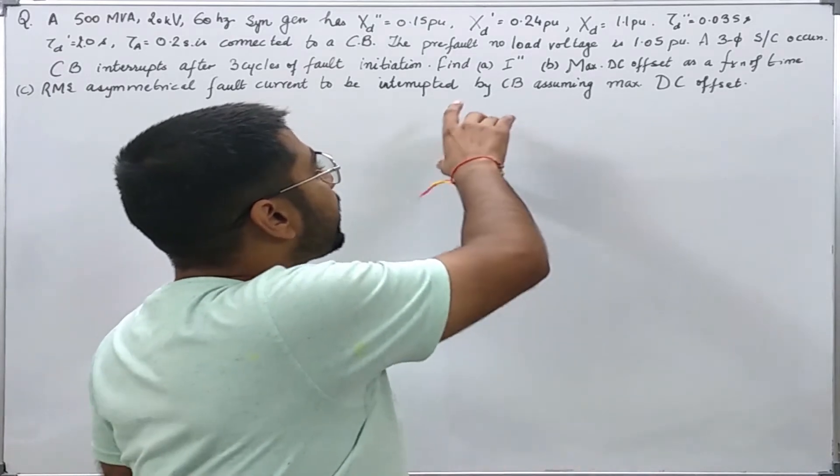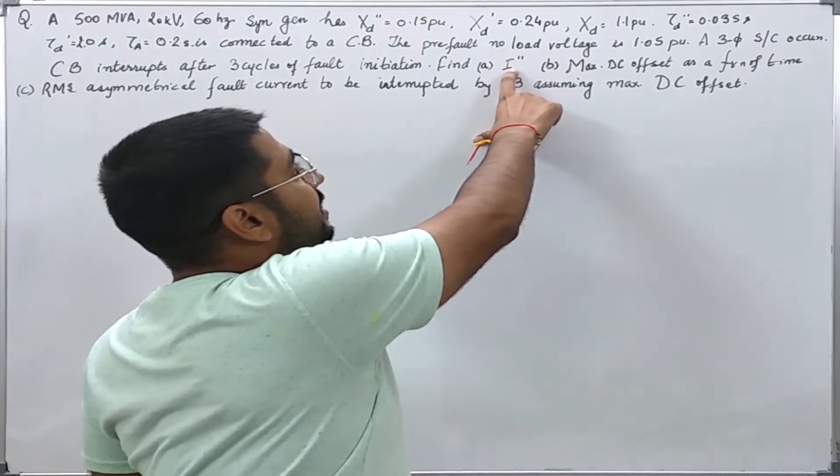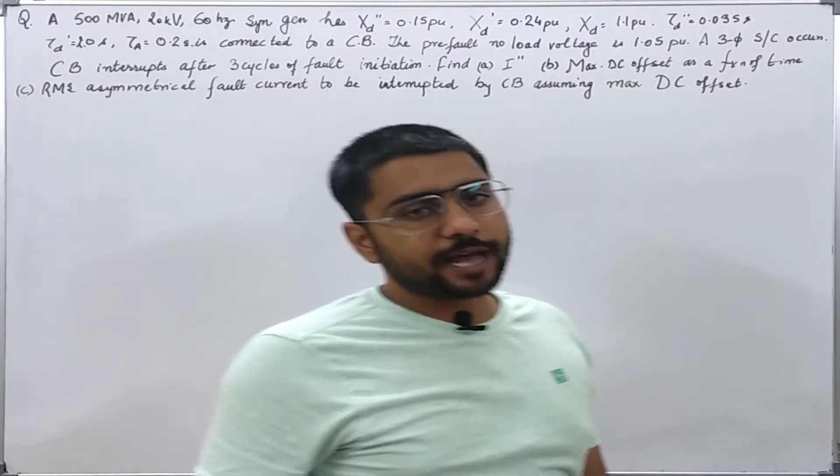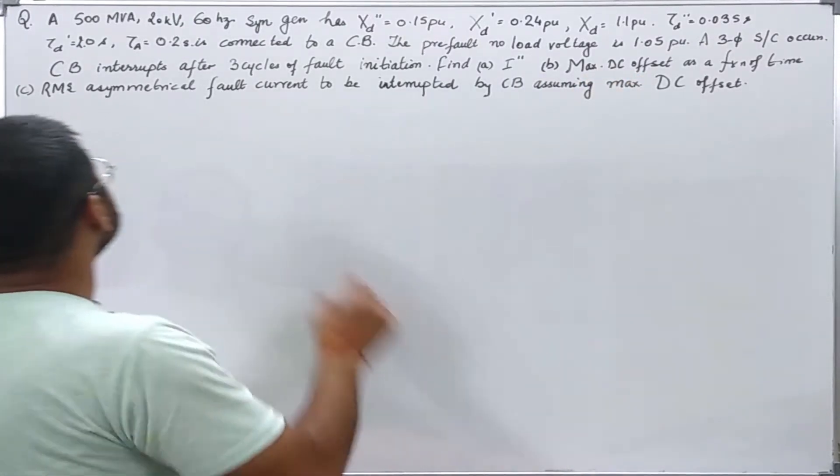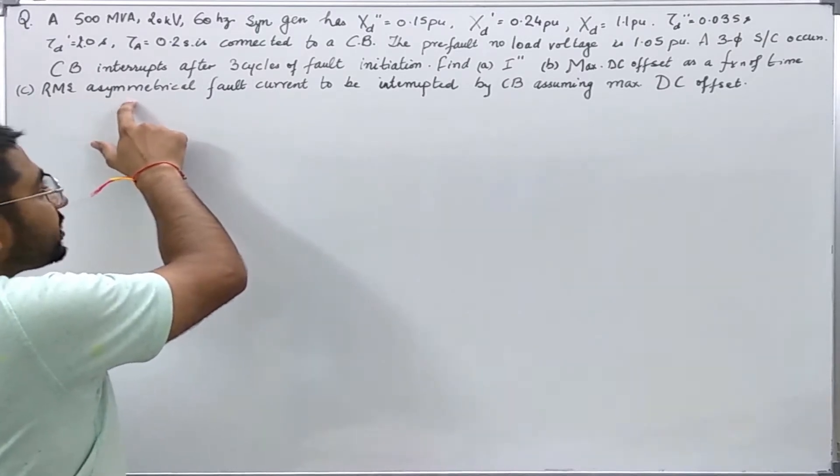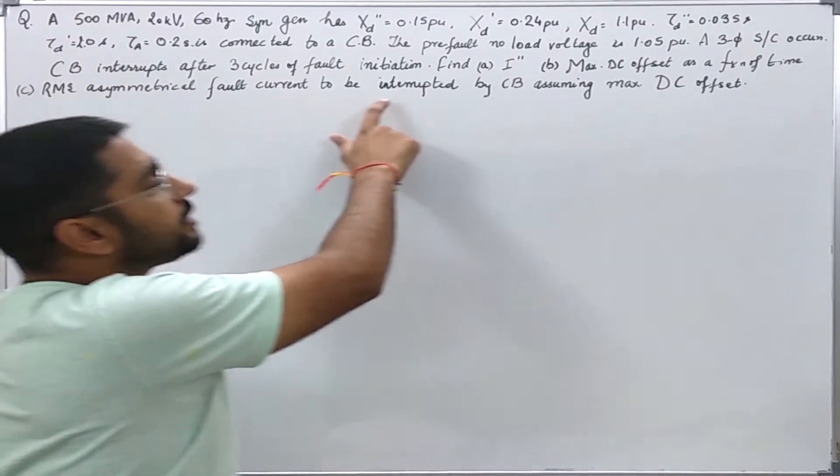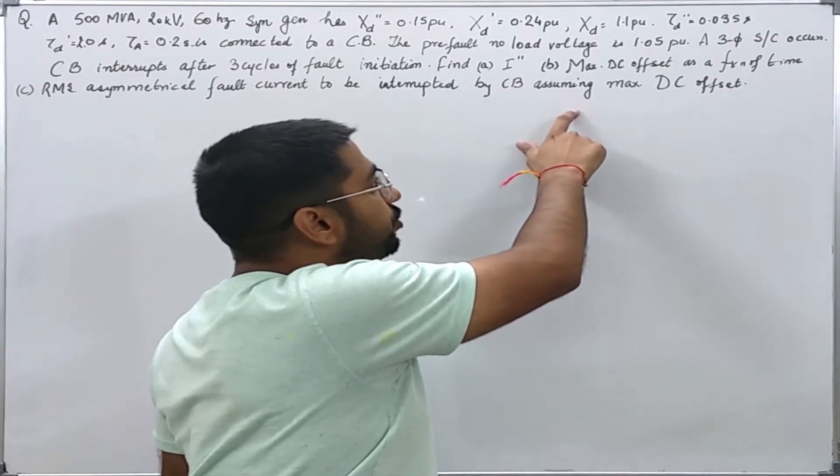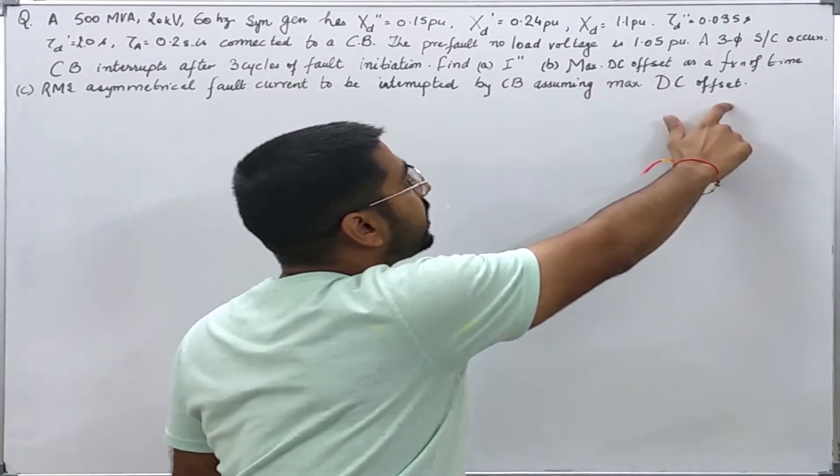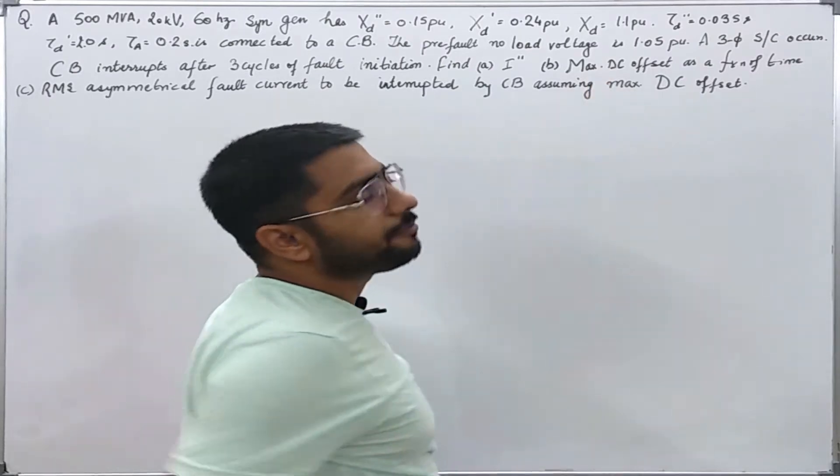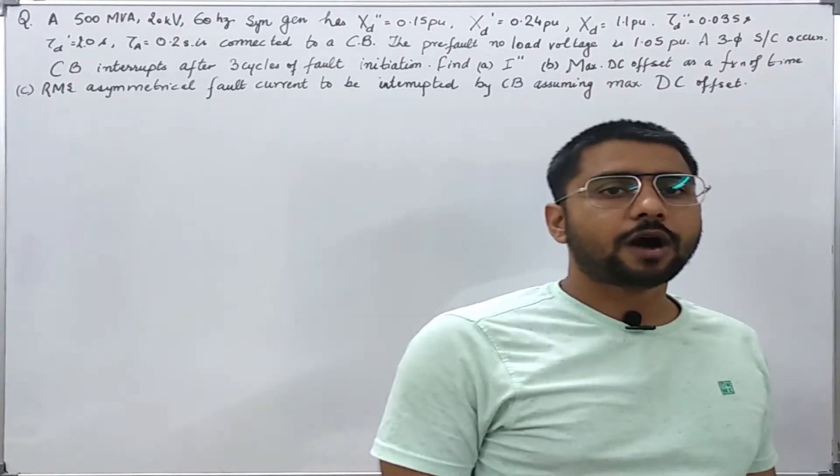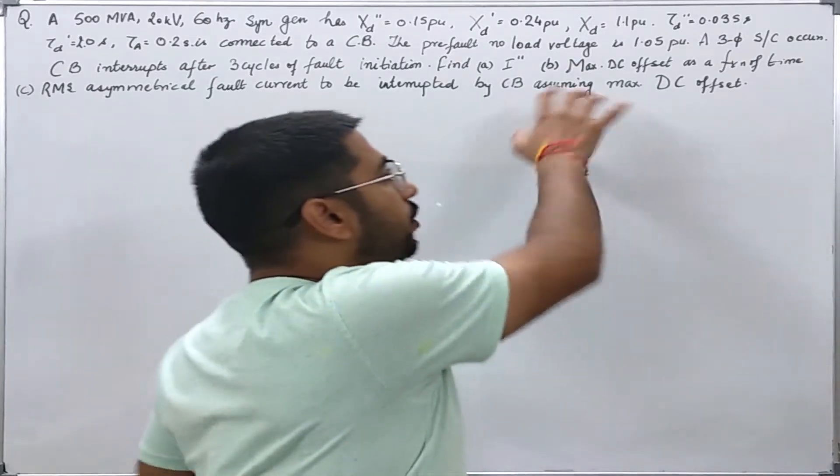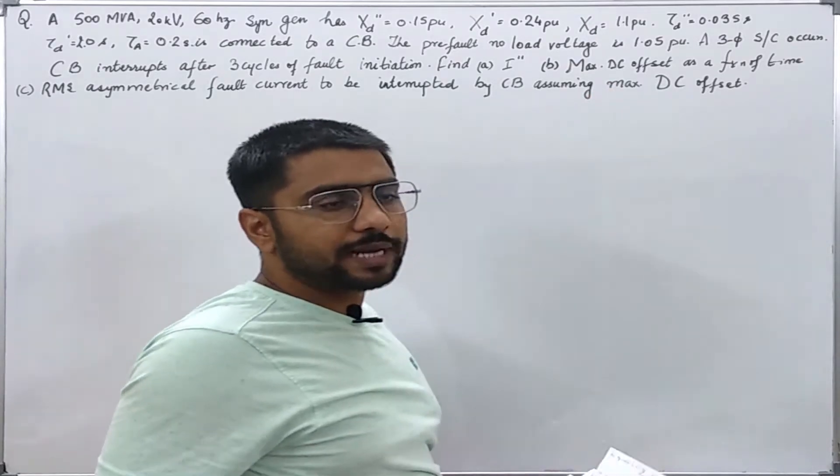So what we are asked? We are asked to find the sub-transient fault current, the maximum DC offset as a function of time, and the RMS asymmetrical fault current which will be interrupted by the circuit breaker assuming that the DC offset is having the maximum value. So let us see how to solve this numerical, and this will cover all the concepts we have studied in our previous two lectures.